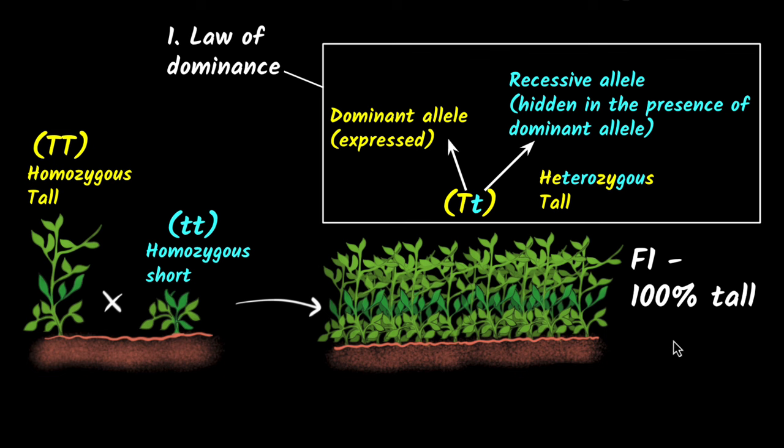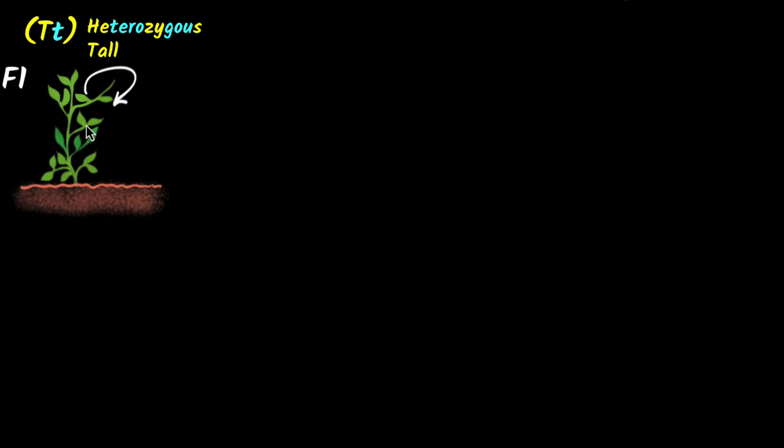Now the next thing Mendel does is that he takes one of these plants and makes it self-pollinate. So he takes one of the plants from the F1 generation, the heterozygous tall, and self-pollinates it. Takes the pollen grains from the flower and puts it in the same plant itself.